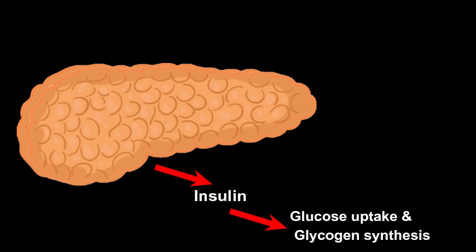When glucose levels rise after a carbohydrate-rich meal, the beta cells of the pancreas produce insulin. Insulin informs the cells that glucose levels are high, and cells respond to this message — specifically cells that express insulin receptors on their surface, such as cells in the liver, skeletal muscle, and fat cells. Cells respond by increasing glucose uptake and increasing glycogen synthesis.